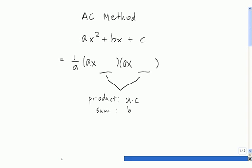Let's use this technique to factor the trinomial 4x squared plus 16x plus 15. Using the template above, we start with putting 1 over a out front. So in our case, a is equal to 4. So we have 1 fourth.